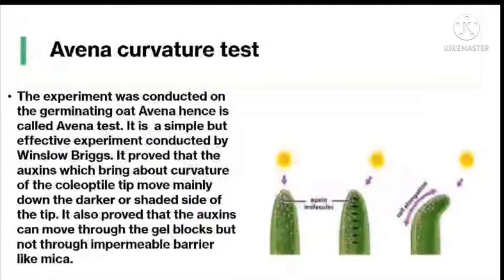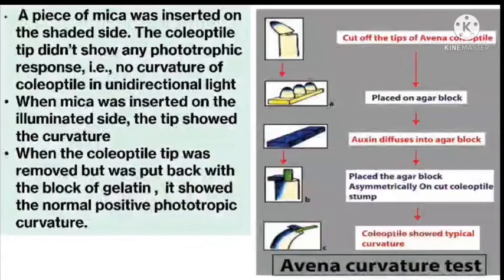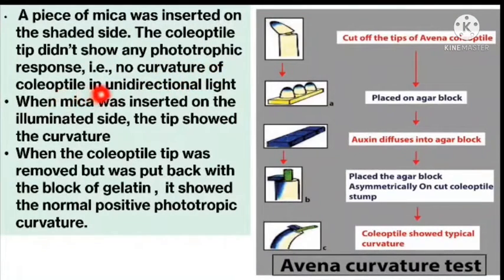The Avena curvature test: this experiment was conducted on germinating oat (Avena), hence called the Avena test. It is a simple but effective experiment conducted by Winslow Briggs. It proved that auxins bring about curvature of the coleoptyle tip by moving mainly down the darker or shaded side. It also proved that auxins can move through gel blocks but not through an impermeable barrier like mica — when mica was inserted on the shady side, the coleoptyle tip showed no phototropic response in unidirectional light.